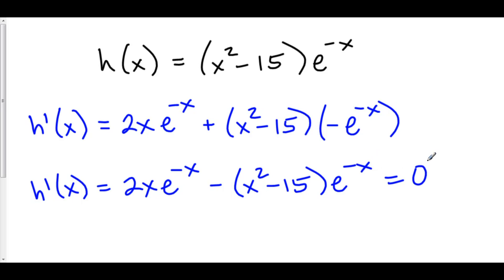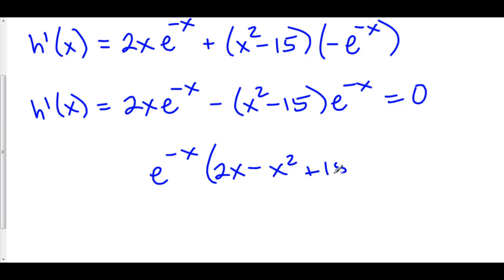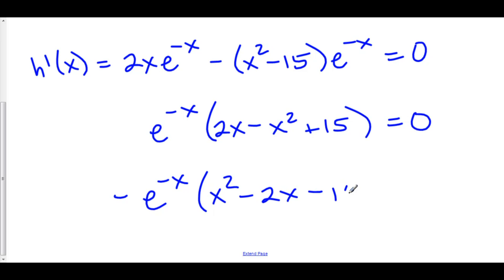Now we want to set this equal to zero. One of the easier ways to do this is to factor out an e^(-x). When we factor out e^(-x) we're left with 2x minus the whole polynomial, and the negative has to be distributed to both the x² and the negative 15, giving negative x² plus 15. Let's factor out a negative, giving negative e^(-x) times x² minus 2x minus 15, all equal to zero.